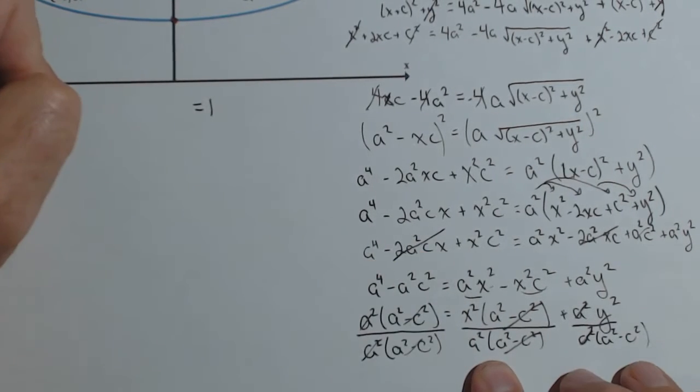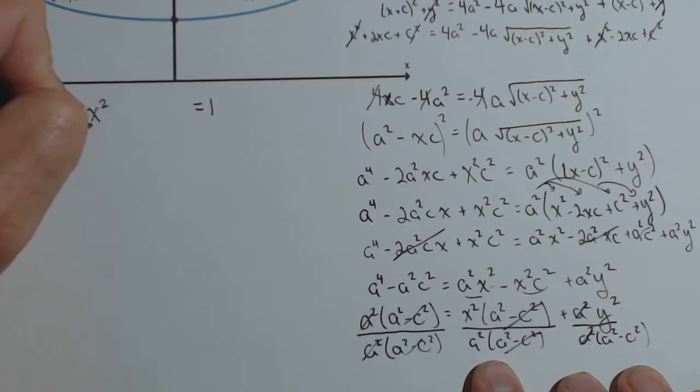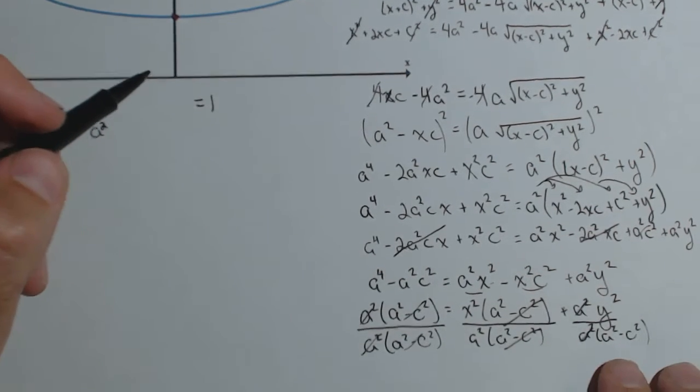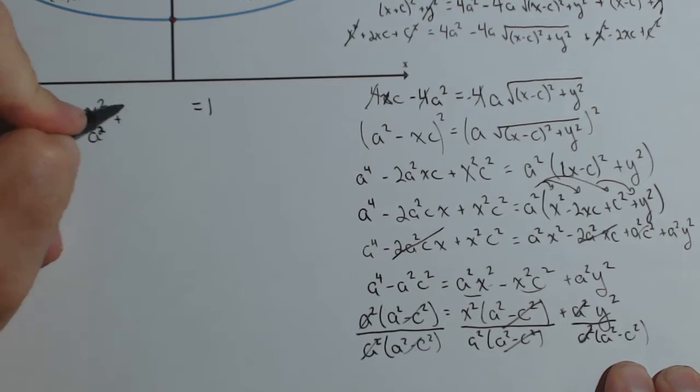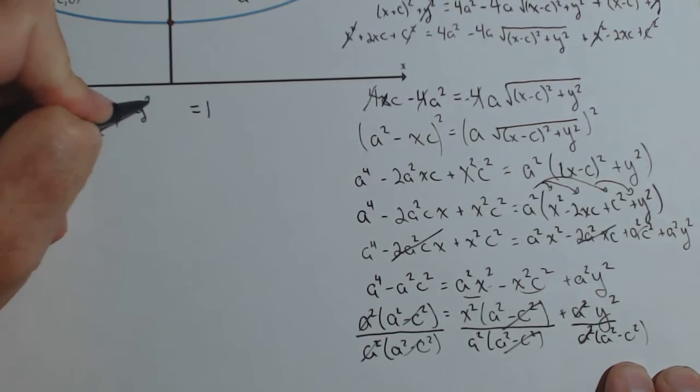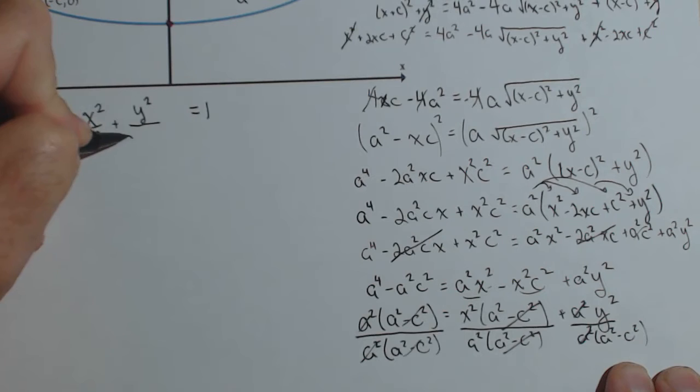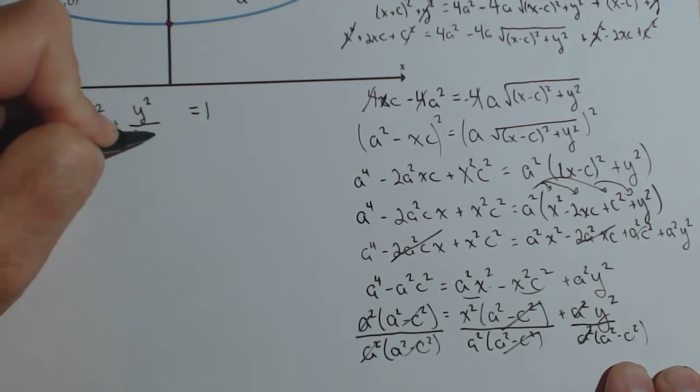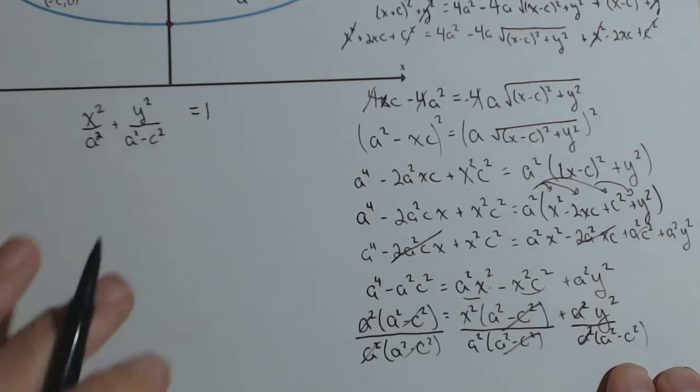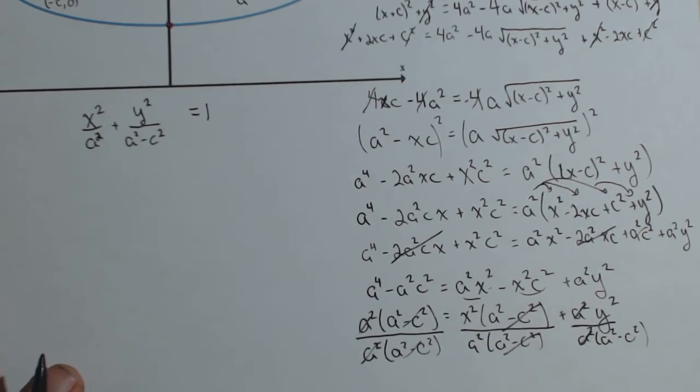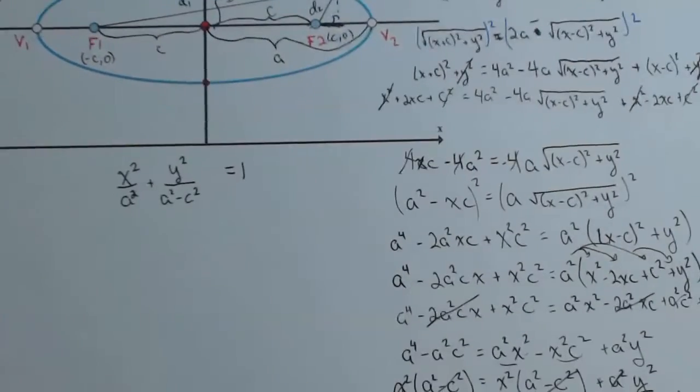Here, I get left with x squared over a squared. And here, I get plus y squared over a squared minus c squared.